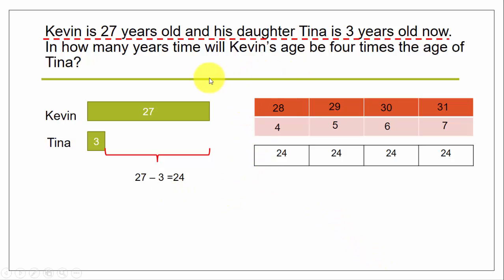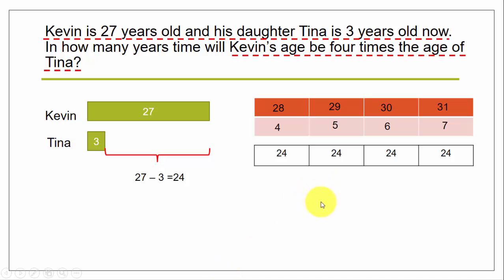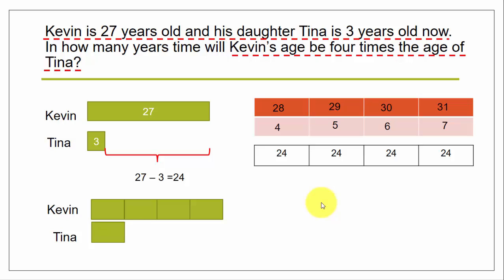Now we come to the second part of the question: in how many years' time will Kevin's age be four times the age of Tina? So we draw one block for Tina, and Kevin should have four such blocks — four times the age of Tina. We know the difference in their age will always be 24, which means even in this future diagram, the difference must still be 24.